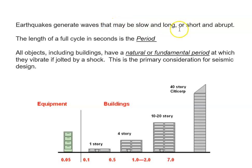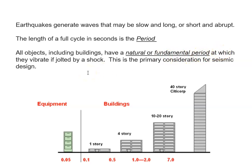Earthquakes generate waves that may be slow or long, short or abrupt. The length of that full cycle in seconds is called its period. These are the waves that make buildings start to move, and there's a cycle to things moving — a back and forth. How long it takes something to move back and forth is what we call its period. All objects, including buildings, have natural or fundamental periods at which they vibrate if jolted or shocked. This is a primary consideration in seismic design. When an earthquake hits, everything jolts and moves, and the concern is how quickly it actually stops and slows down.